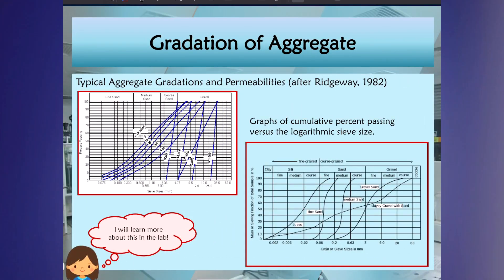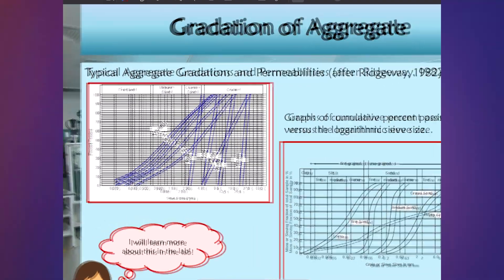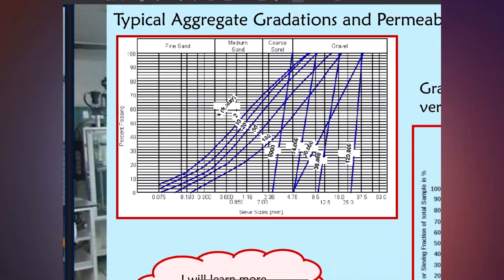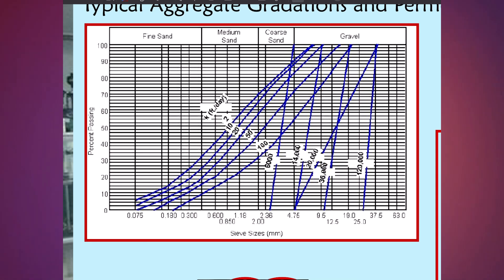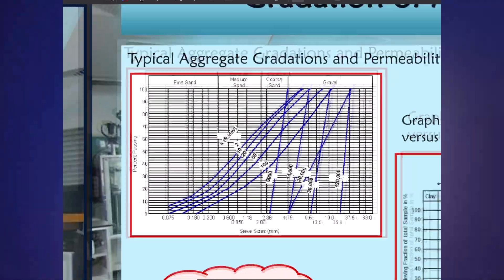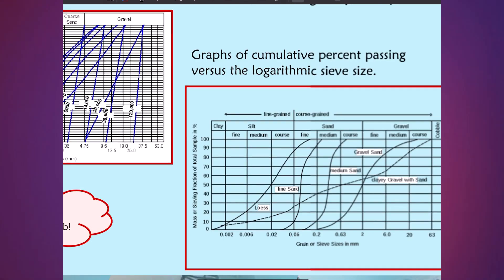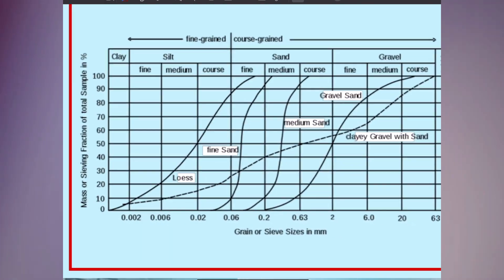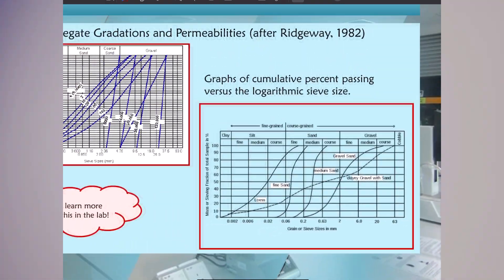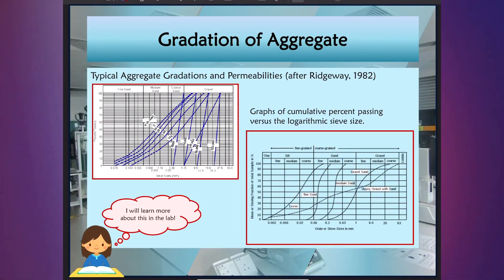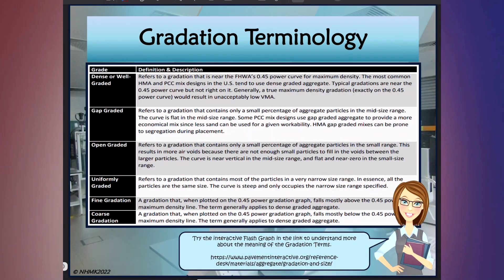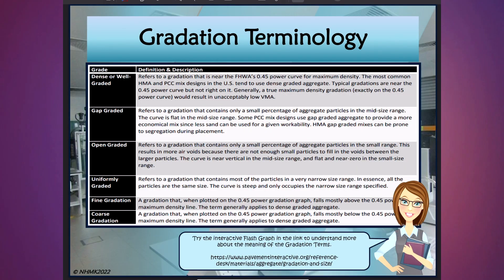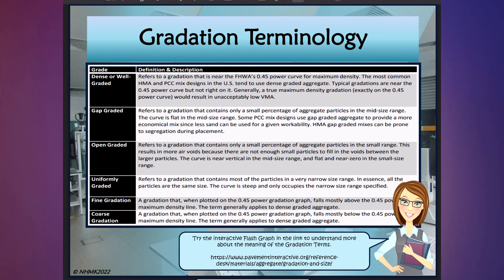This is a typical aggregate gradation and permeabilities chart — a semi-log graph used for aggregate gradation, showing cumulative percent passing versus the logarithmic sieve size. You will learn more about this in the laboratory. The gradation terminology includes: dense or well graded, gap graded, open graded, uniformly graded, fine gradation and coarse gradation.